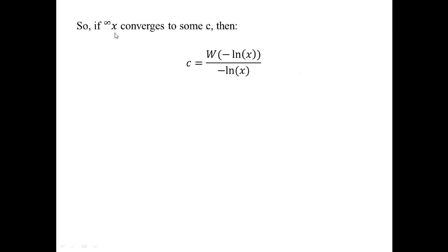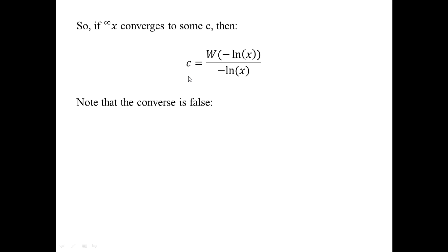So to summarize: if X is one of those bases in the special interval such that the infinite tetration converges to some number C, then C can be calculated by the formula W(−ln X) / (−ln X). It's important to note that we needed that convergence assumption to derive this formula — if the assumption doesn't hold, you can't use this formula.